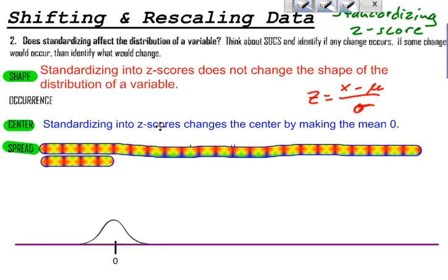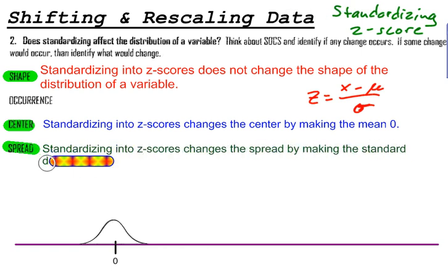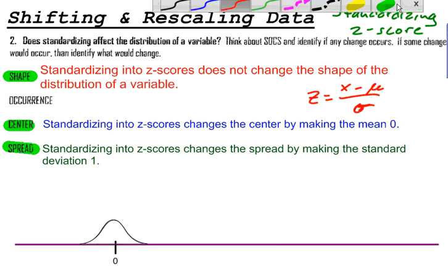And then, what about the spread? Well, when I standardize into z-scores, it changes the spread by making the standard deviation one. So not only did we shift it, but when we rescale it, it changes the spread of the distribution from whatever it was. I think for the Wookiees, the distribution was 5.2 inches, or I should say the standard deviation of the distribution was 5.2 inches. But when I standardize, it changes the standard deviation into one.